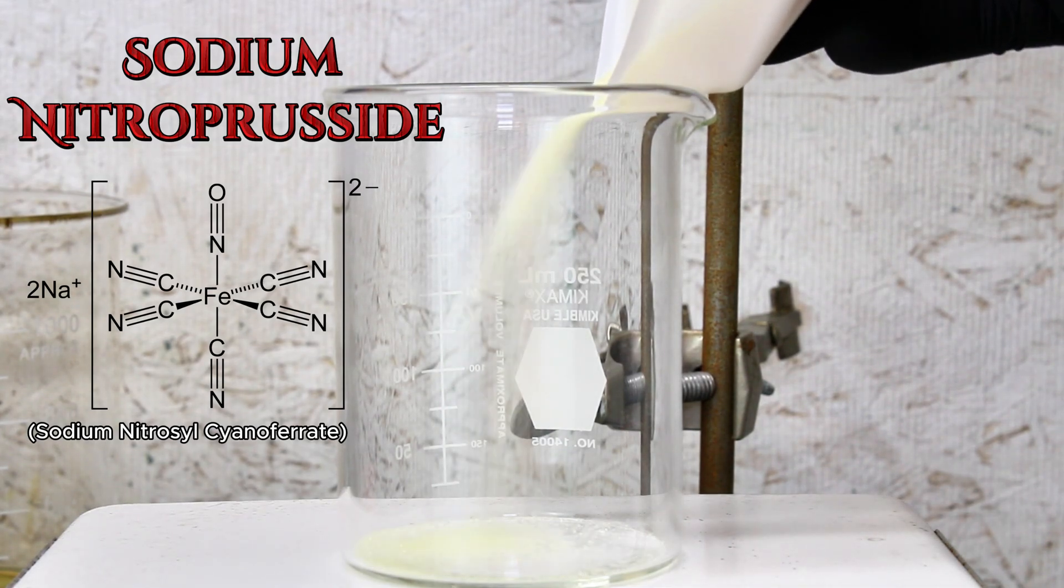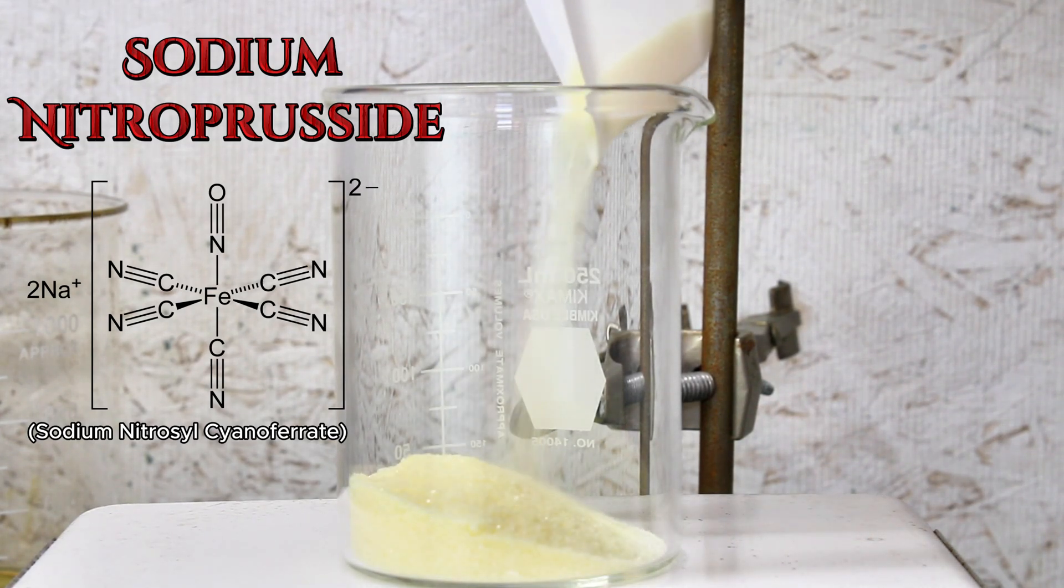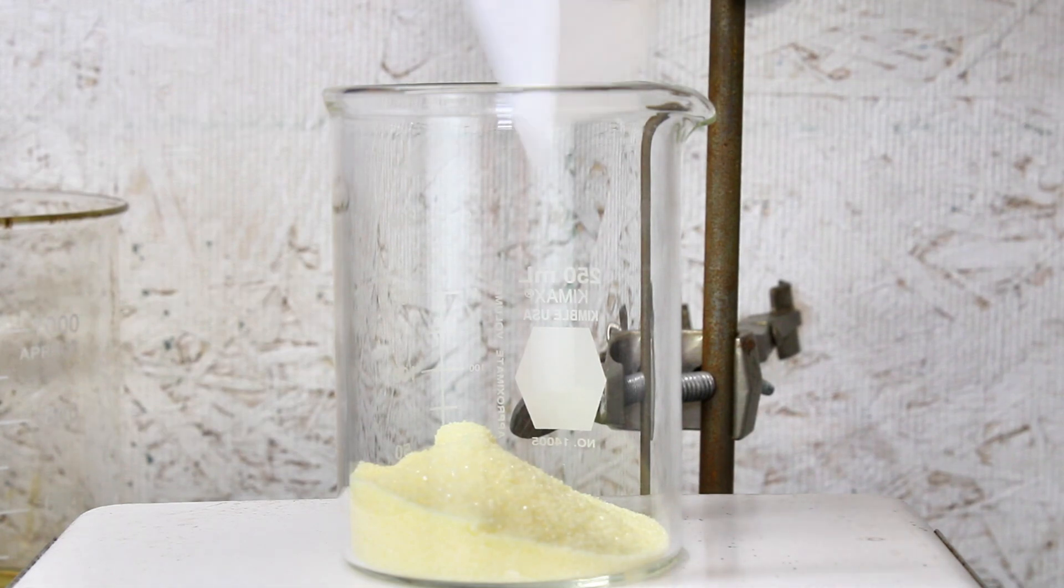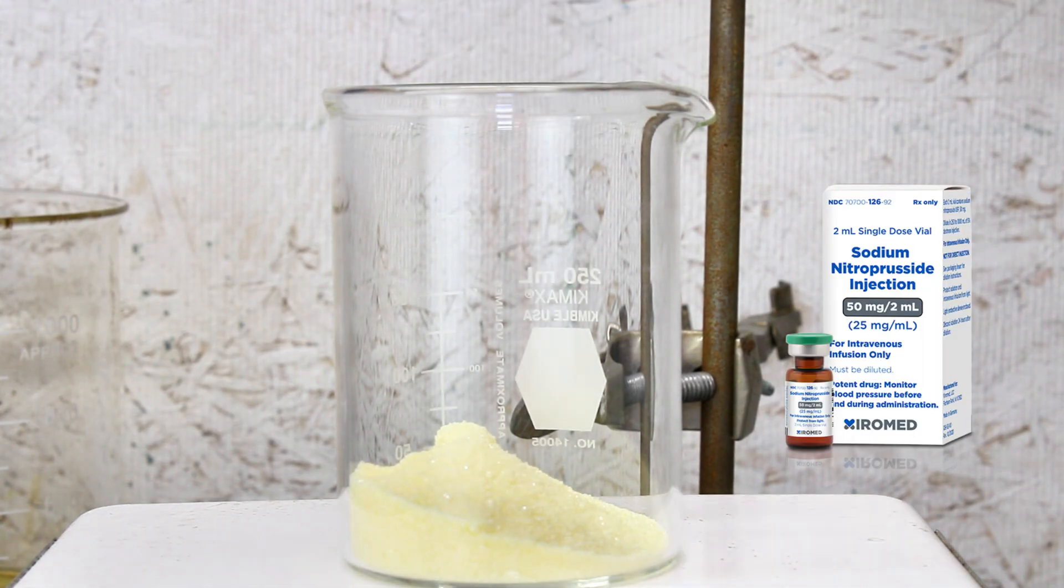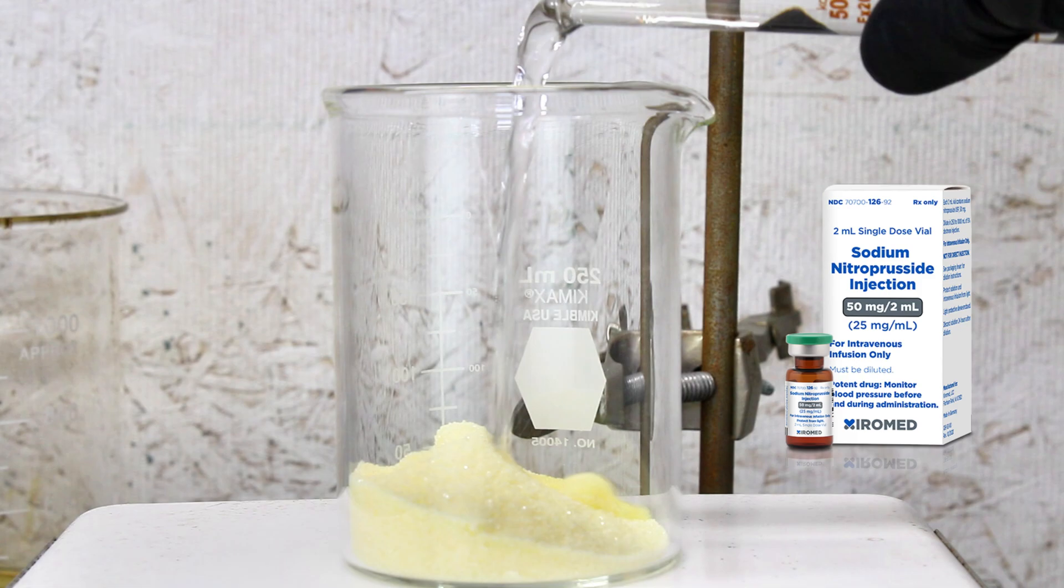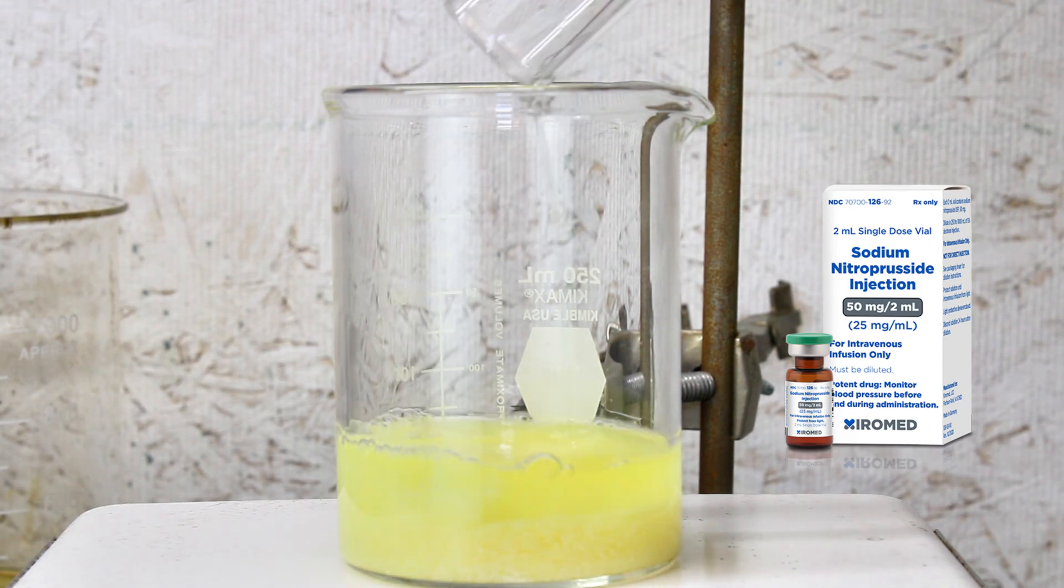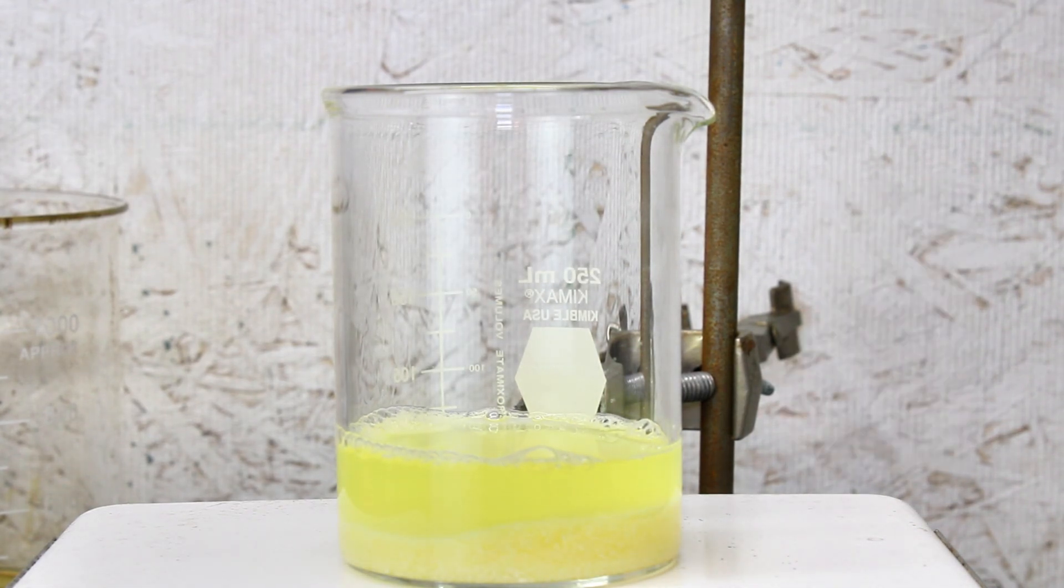Today I'm going to make the chemical sodium nitroprusside, which is primarily used as a medication under the brand name NitroPress. Sodium nitroprusside works by rapidly lowering blood pressure in the case of a hypertensive crisis or during surgery to reduce bleeding.